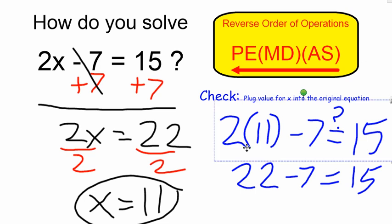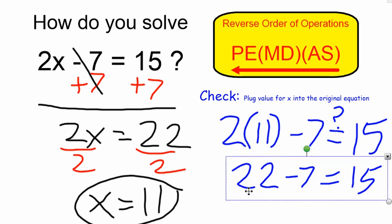2 times 11 is 22, and when I subtract 7, I do in fact get 15. So this does check out.